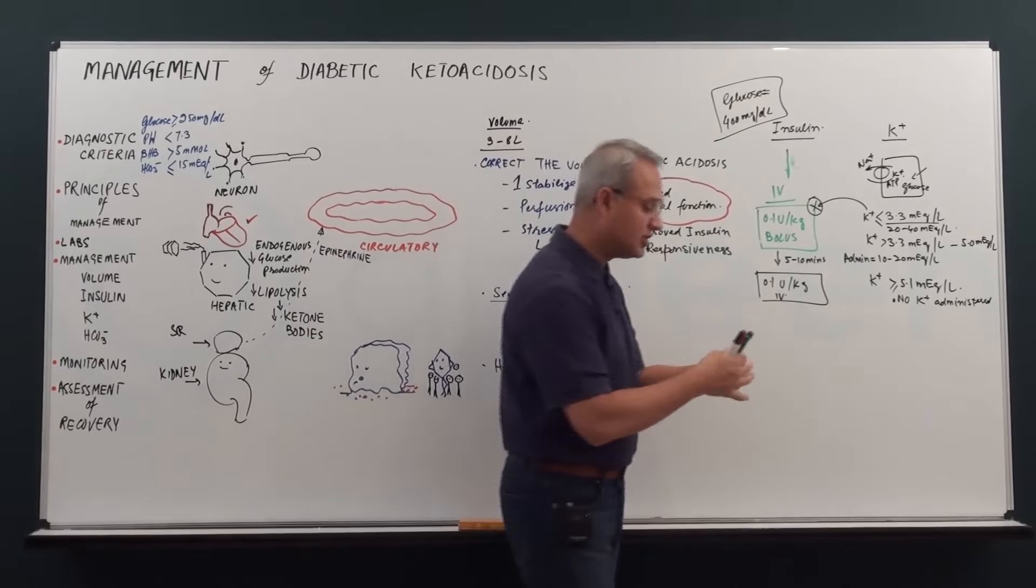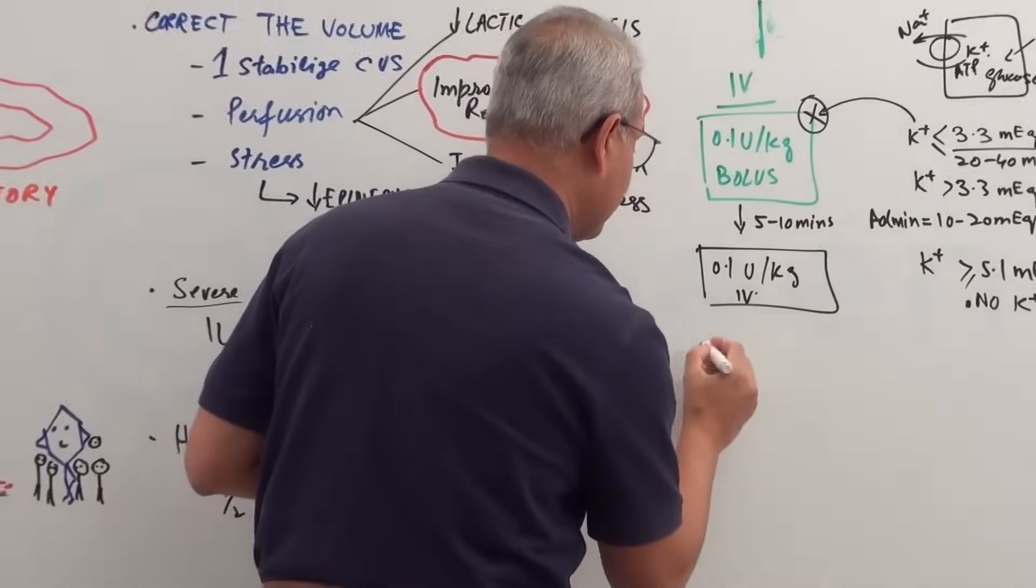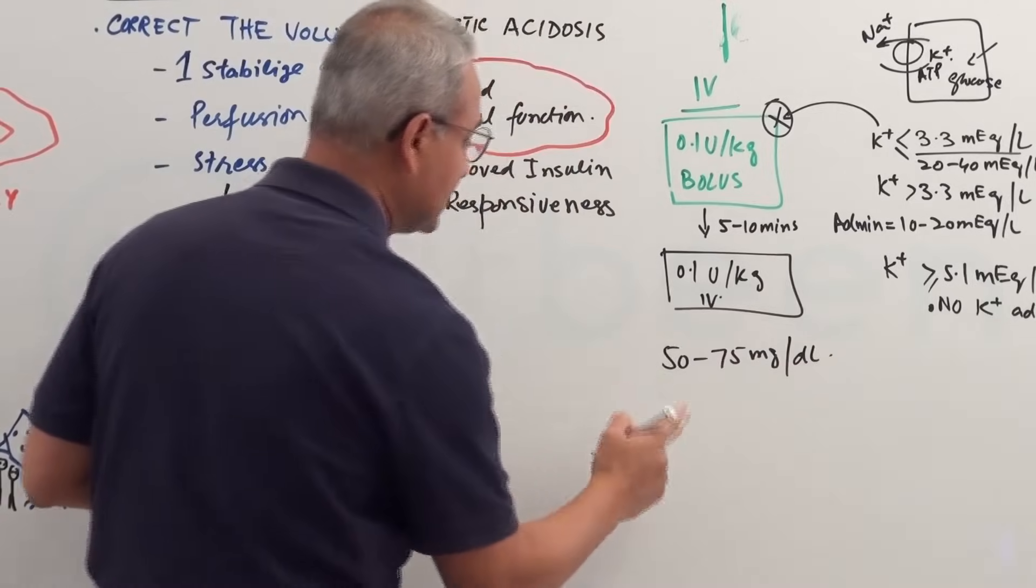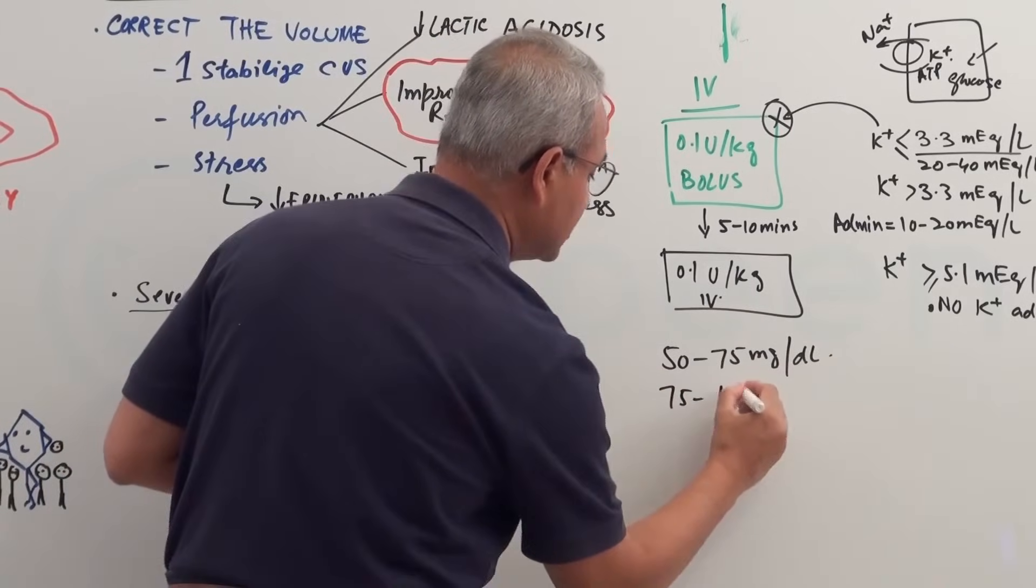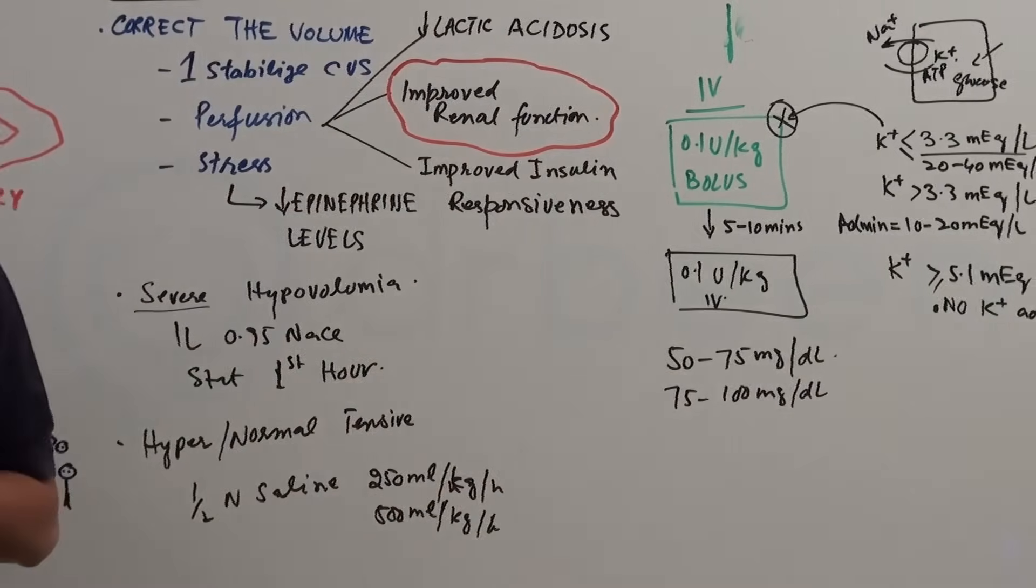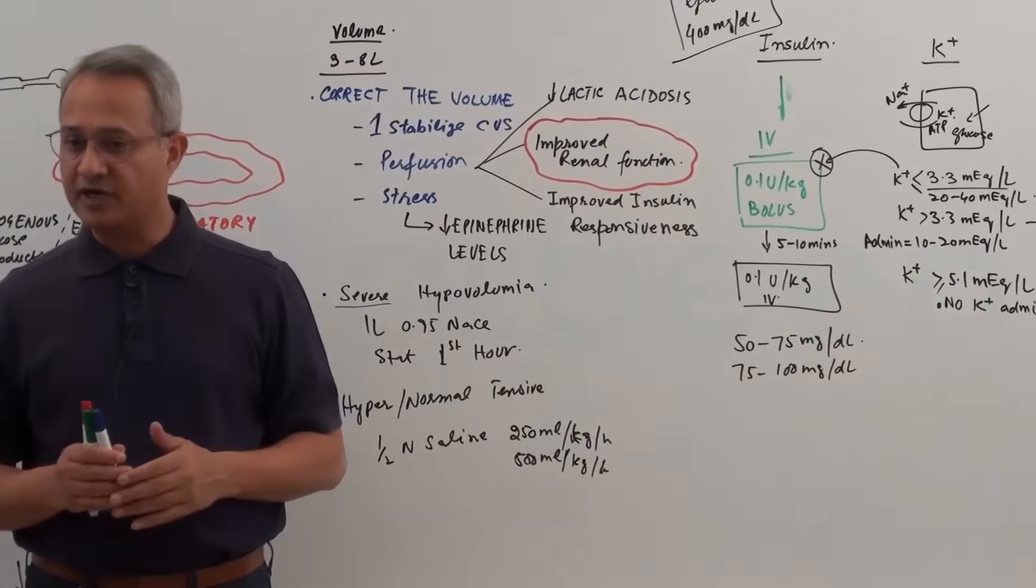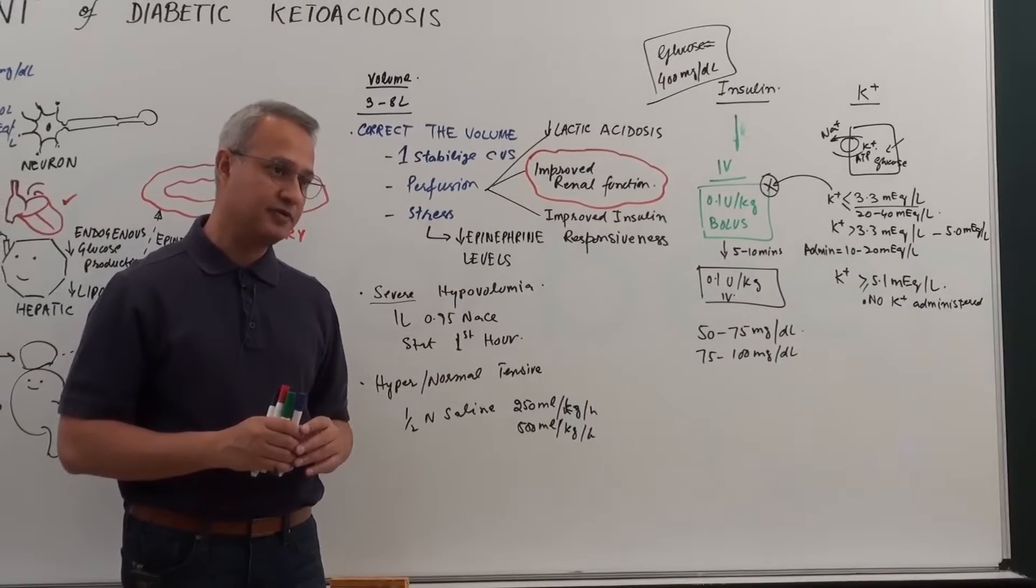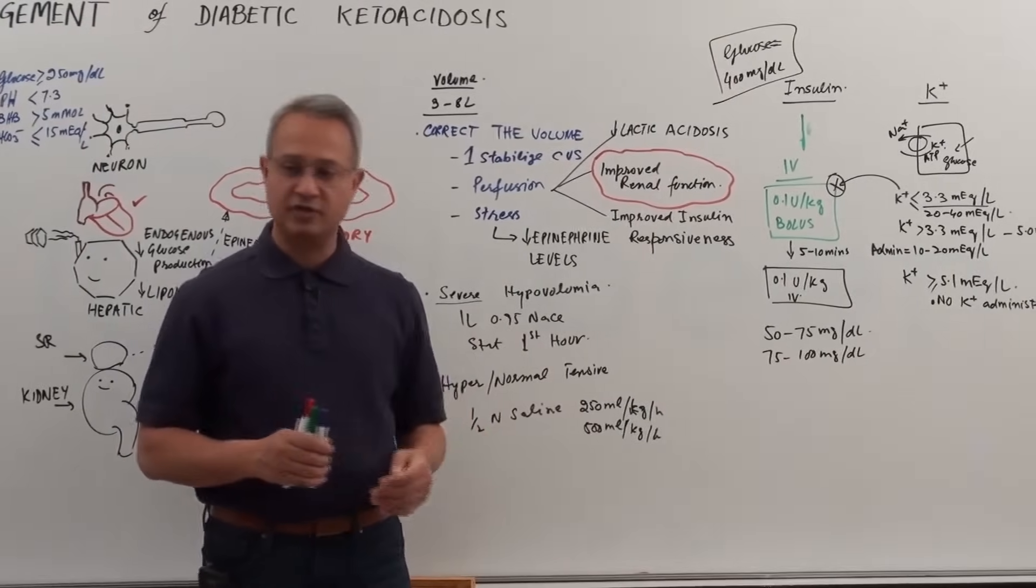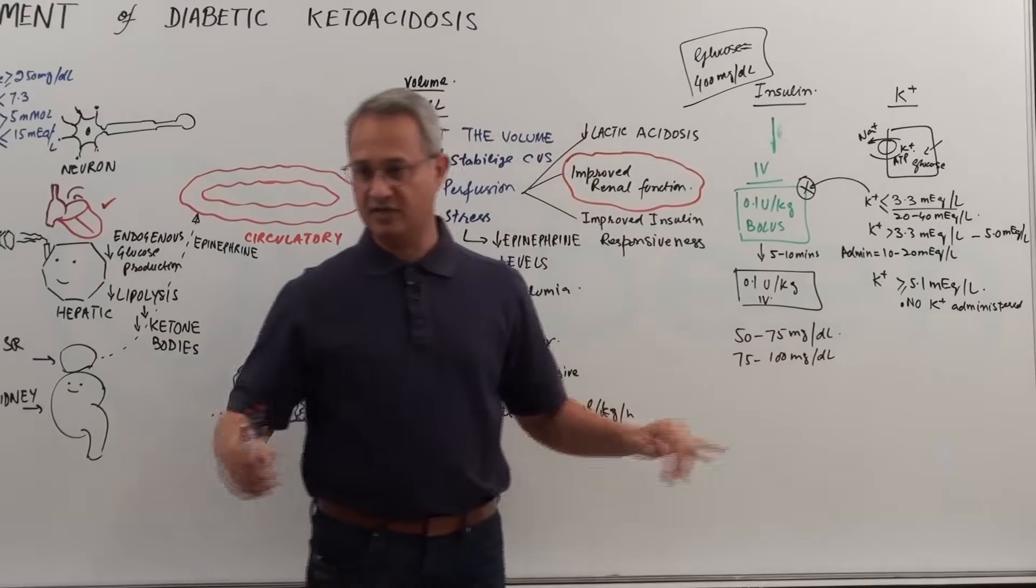Here you're monitoring glucose. What levels you should not exceed per hour? What drop level? 50 to 75 mg per deciliter. Now there are some books that say 75 to 100 mg per deciliter. American Diabetes Association says 75 to 100. CISL says 50 to 75. But do not drop it anywhere faster than 100 mg.